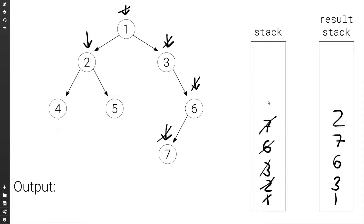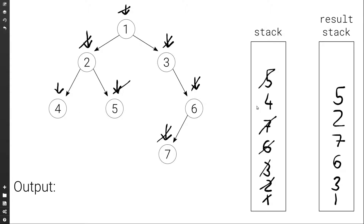Then we check does two have a left child — yes it does, so we push it to the first stack. And we check does it have a right child — yes it does, so we push that too. We go back to the first stack and set current to the top, which is five. We pop it and push it to the result stack. Five has no left child and no right child, so we're done with five. We go back to the first stack, set current to the top, which is four. We pop this from the first stack and push it to the result stack. Four has no left and no right child. We go back to the first stack, but this time the stack is empty, so this indicates that we're done.